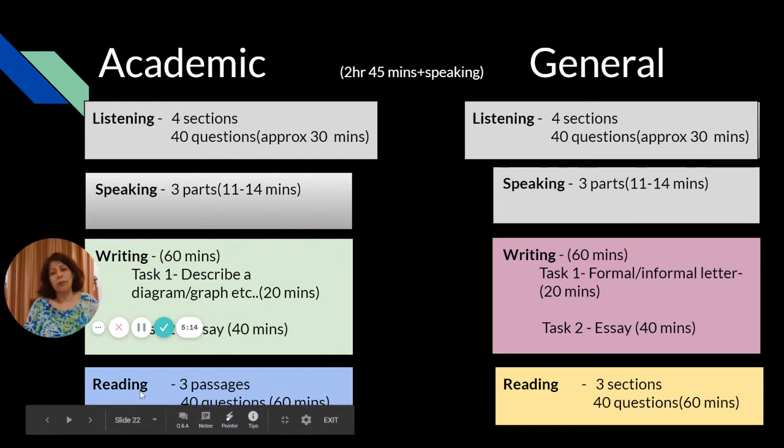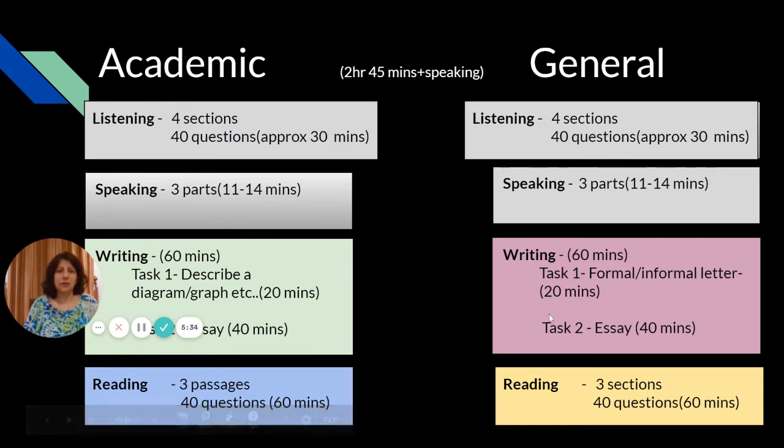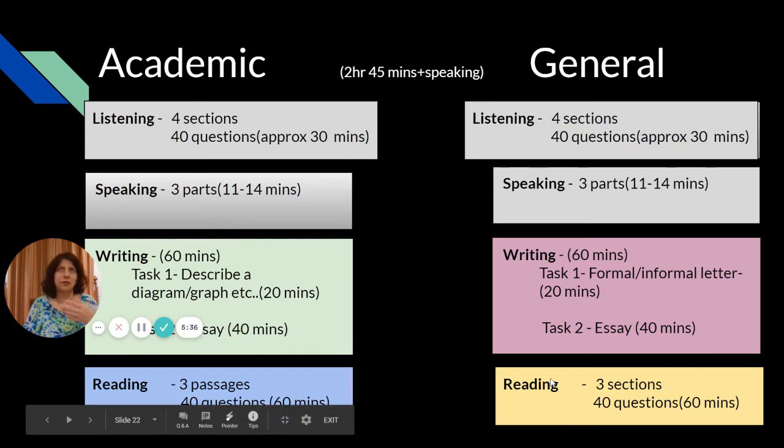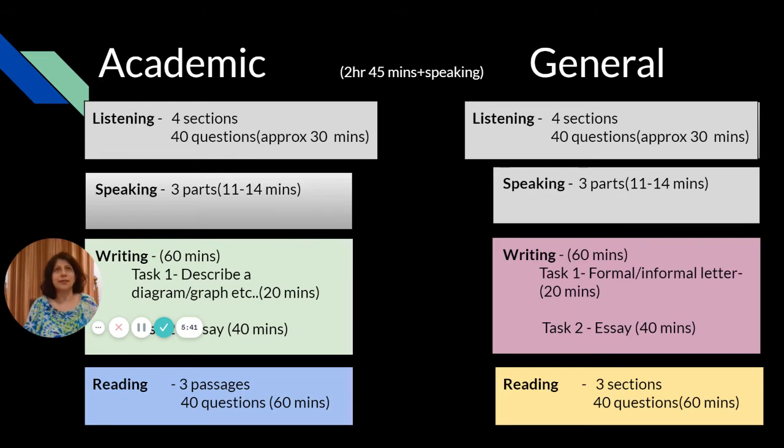Three passages are there, 40 questions. Three sections are there, 40 questions. The difference is that the reading passages for academic are more challenging. For general, they are based upon day-to-day life, so it's relatively less difficult.